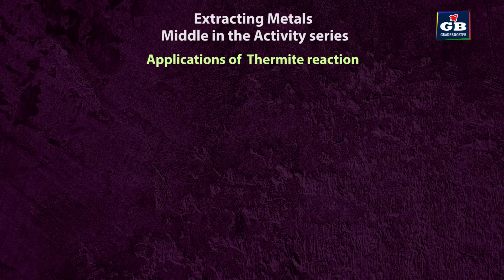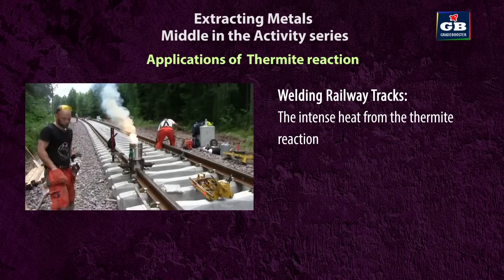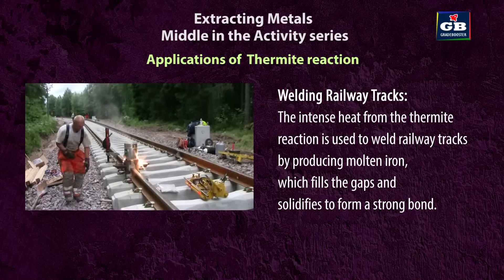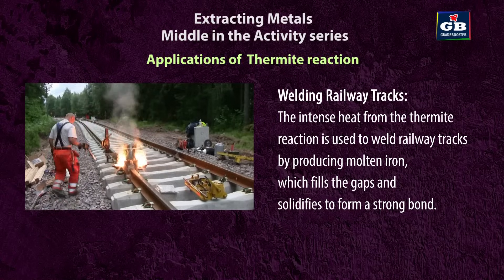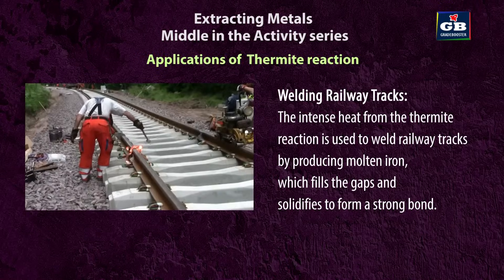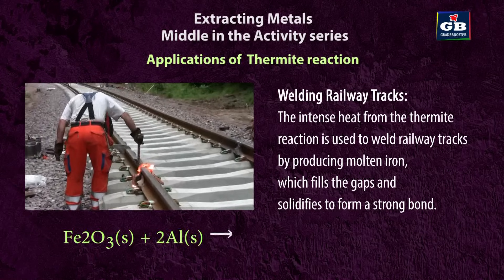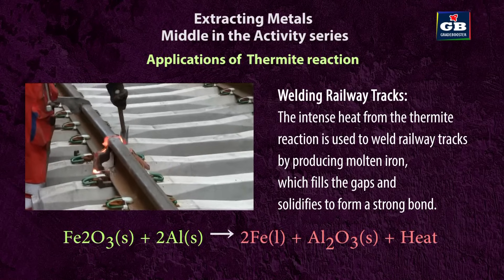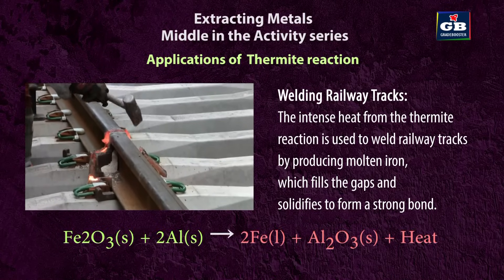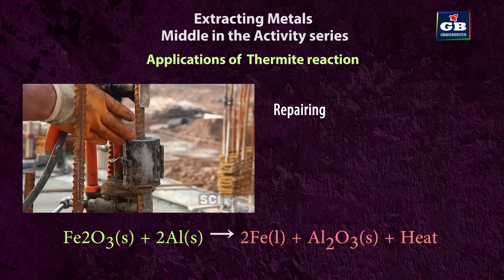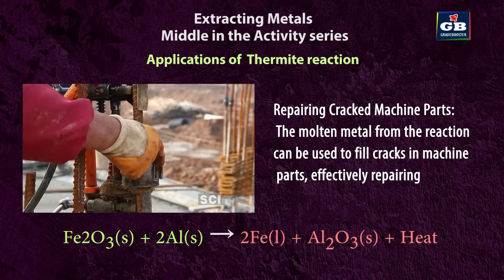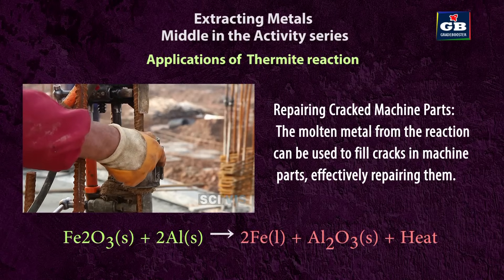Applications of thermite reaction. Welding railway tracks: the intense heat from the thermite reaction is used to weld railway tracks by producing molten iron, which fills the gaps and solidifies to form a strong bond. Fe₂O₃ + 2Al → 2Fe + Al₂O₃ + heat. Another application is repairing cracked machine parts, where the molten metal from the reaction can be used to fill cracks.